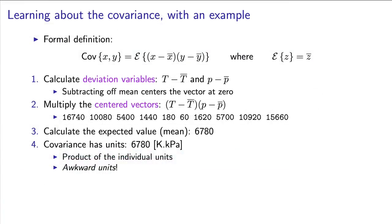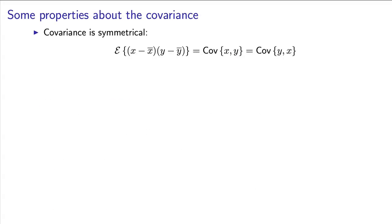I'd like you to repeat that calculation for the covariance between pressure and humidity. Can you confirm that the value is 202 kPa times percentage? You'll also notice that the definition for covariance is symmetrical. If I switch x and y around, I will get the same result. Please pause the video and verify that for yourself in a spreadsheet.